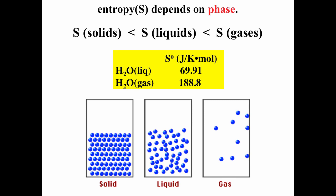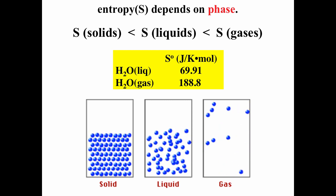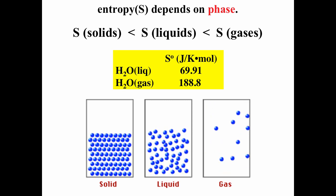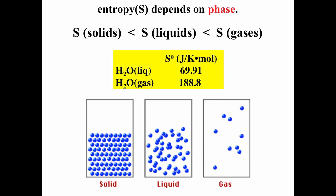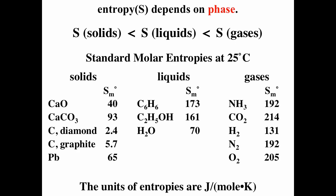Entropy also depends on phase. For a compound, the gas always has higher entropy than the liquid, which always has higher entropy than the solid. Molecular motions are much more random in the gas state than in either the liquid or solid states. For example, water vapor has an entropy of 188.8 and liquid water is 70. Note that sometimes a liquid of one compound may have higher entropy than a gas of a different compound, but for the same compound, gas always has higher entropy than liquid, which always has higher entropy than solid.